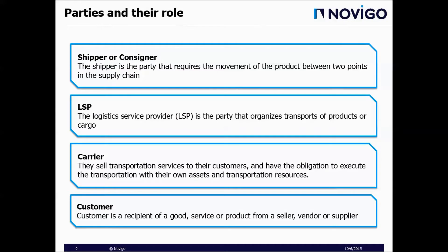In this slide, you can see the four parties involved in transportation scenarios. Starting with the shipper: the shipper is a party that requires the movement of a product between two points in the supply chain. LSP, or logistics service provider, is a party that organizes transport of product or cargo. Carriers sell transportation services to their customers and have the obligation to execute transportation with their own assets and transportation resources. A customer is a recipient of a good, service, or product from a seller, vendor, or supplier.